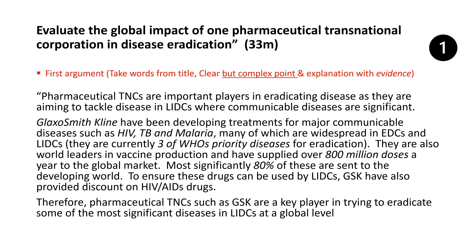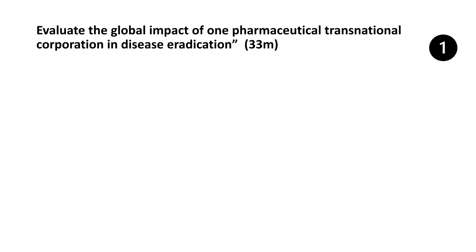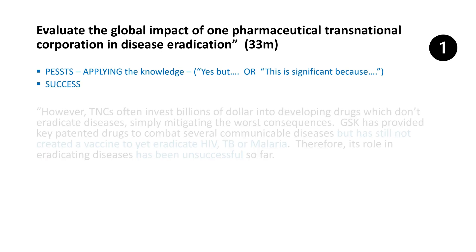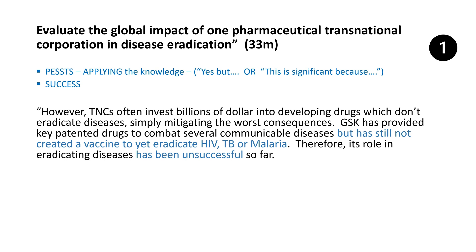That main argument is only half of the marks I'd get for my first argument. Using the PRESS structure — if you're not sure what it is, check the other videos — I'm either going to double down and say yes this is very important, or say yeah but maybe this isn't as significant as I initially made out. Here I'm going for the 'yeah but.' TNCs develop lots of drugs and it costs billions to do that, but often these are just mitigating consequences. GlaxoSmithKline haven't actually produced a drug that has eradicated HIV, TB, or malaria — antiretroviral drugs mitigate consequences but have been unsuccessful in actually eradicating any disease so far.